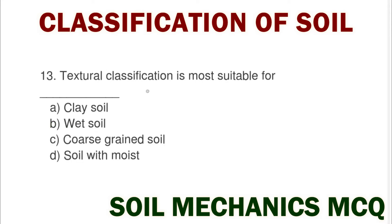Next question: the textural classification is more suited for option A clay soil, option B wet soil, option C coarse grain soil, option D soil with moisture. The correct answer is option C coarse grain soil.